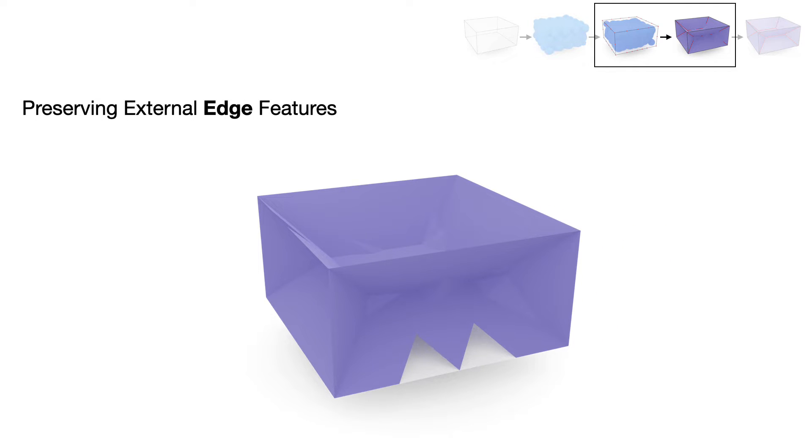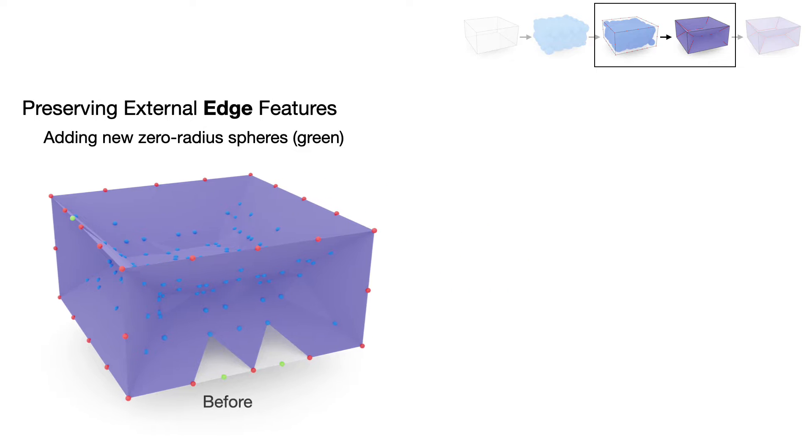For preserving external edge features, our adaptive resampling strategy will detect the deficiency of feature spheres on external edge features, then recursively adding new feature spheres until all external edge features are preserved.